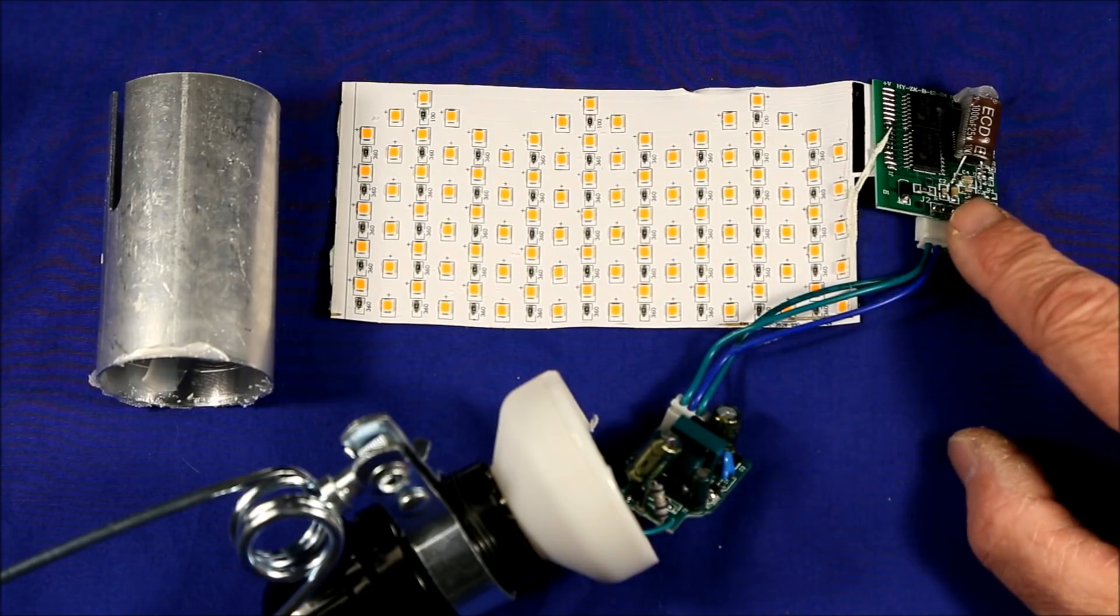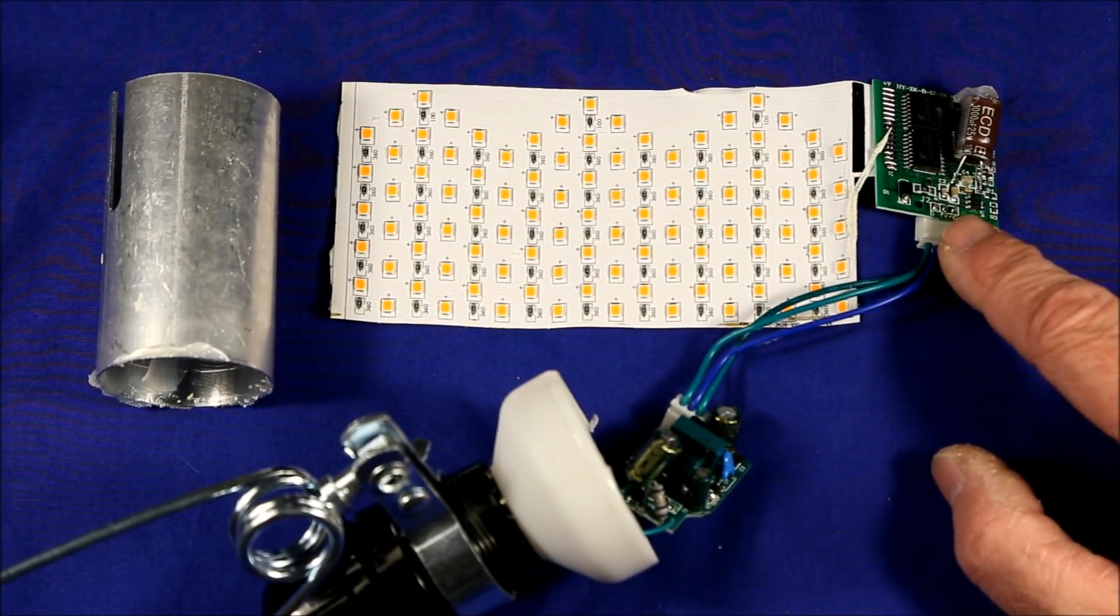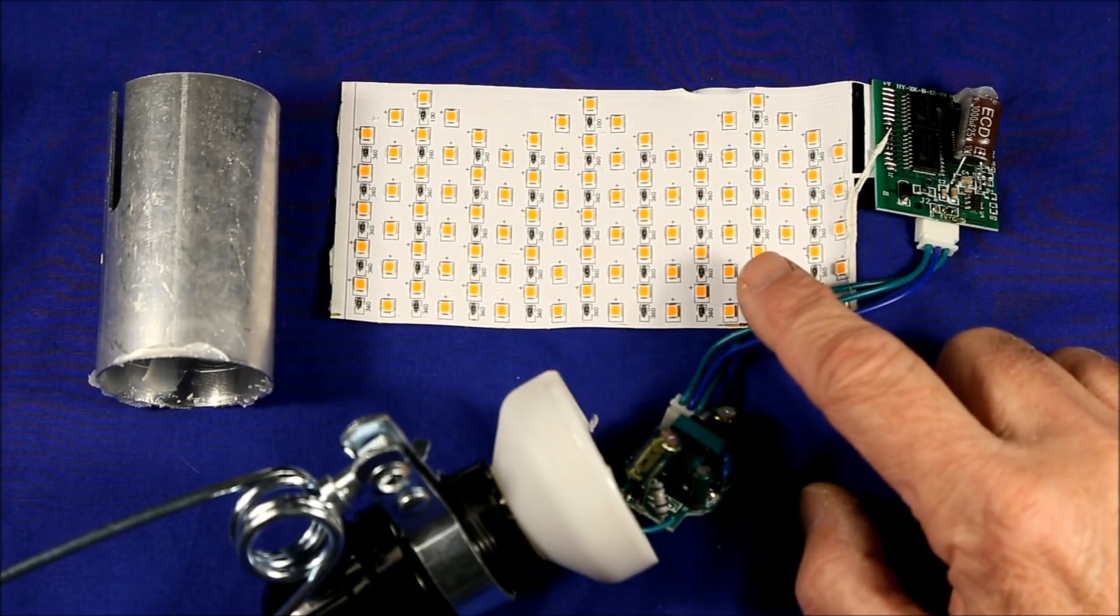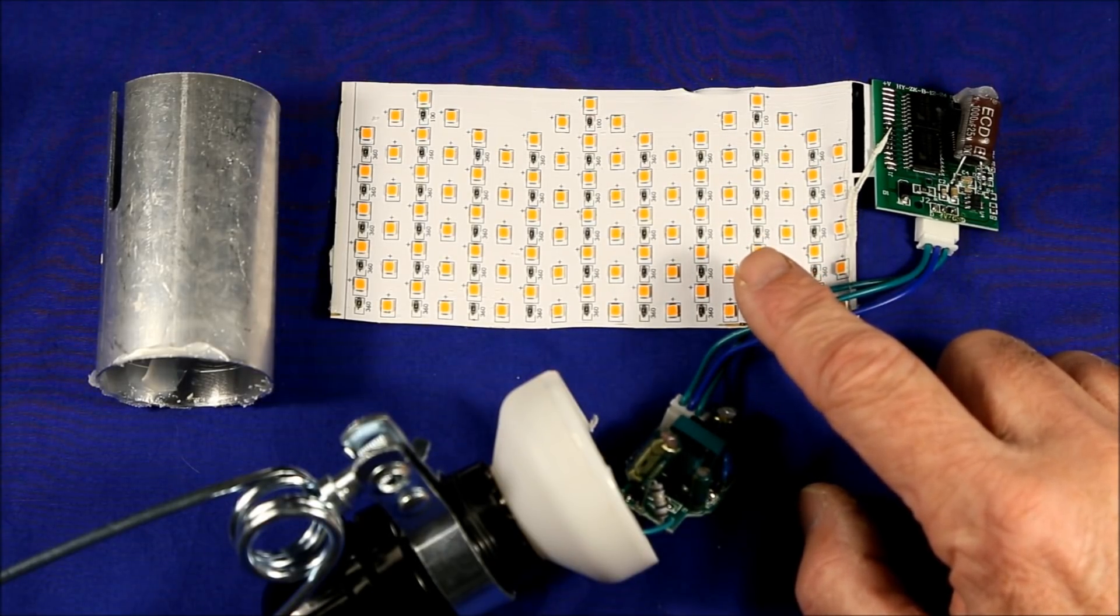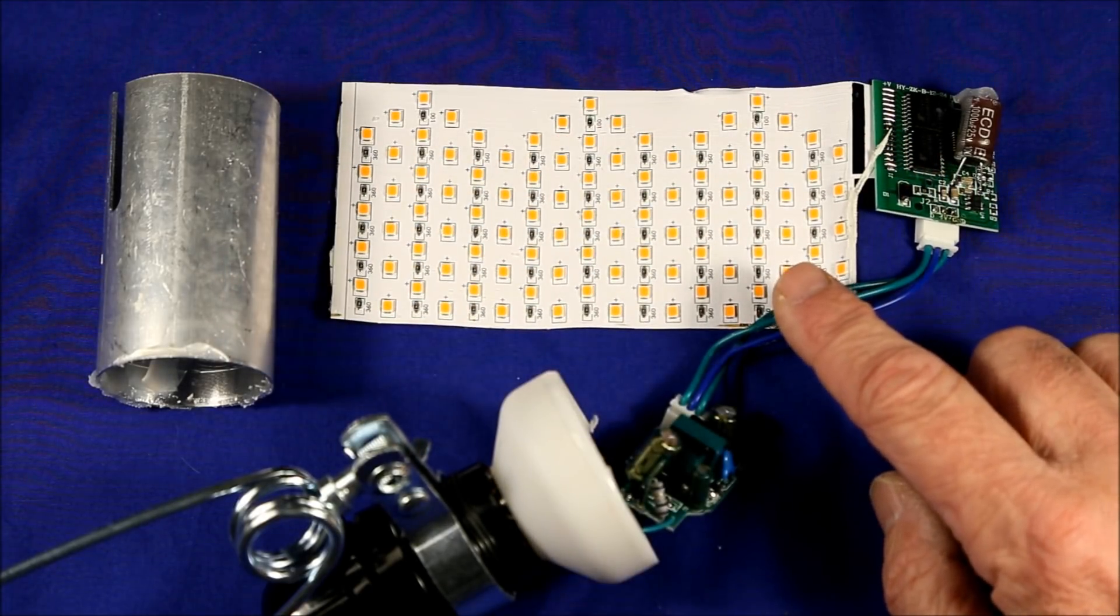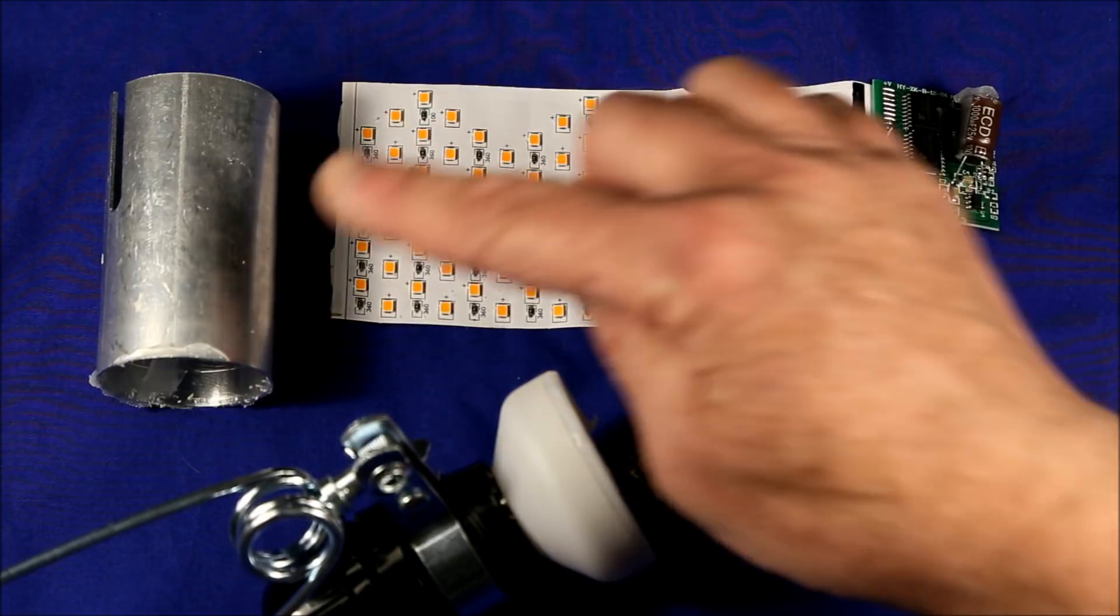The current is fed into a pair of timing chips, which control how the lights flash. The lights are mounted on a thin, flexible plastic sheet, which is wrapped around a fairly heavy aluminum central cylinder. This is for cooling.